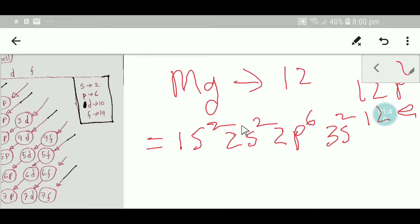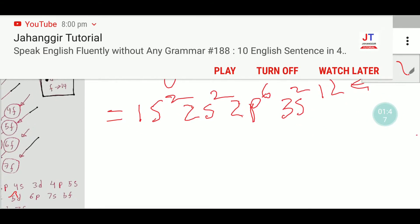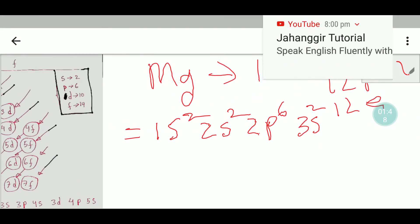So we have 12 electrons in magnesium. Now we need to find out the valency shell of magnesium.